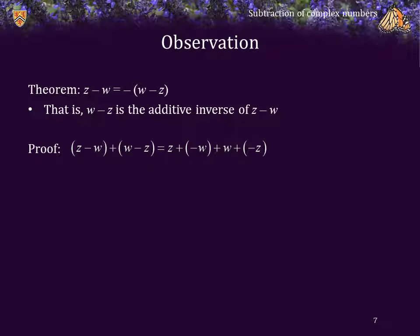However, remember that complex addition is commutative and associative, so let's just rearrange those as follows. But z plus its additive inverse and w plus its additive inverse are both zero. So this is 0 plus 0, or 0. Thus, w minus z is indeed the thing which added onto z minus w to equal 0.